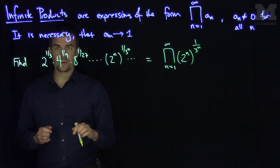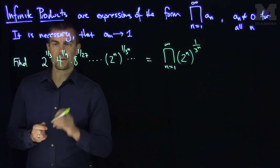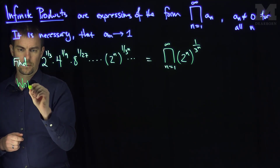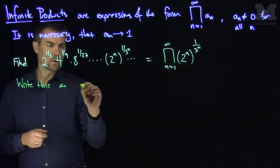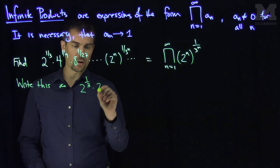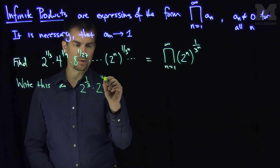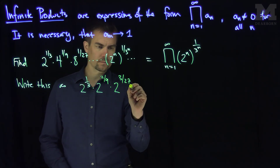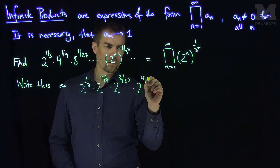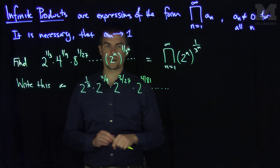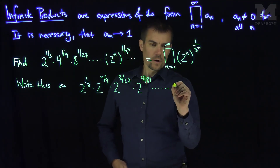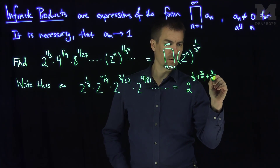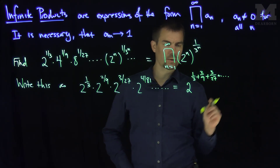We can observe the following: writing four as two squared, we can rewrite this as two to the one-third, times two to the two-ninths, times two to the three over twenty-seven, times two to the four over eighty-one, and so on. Now the base of all these terms is two, so this equals two raised to the sum: one-third plus two-ninths plus three over twenty-seven, and so on.